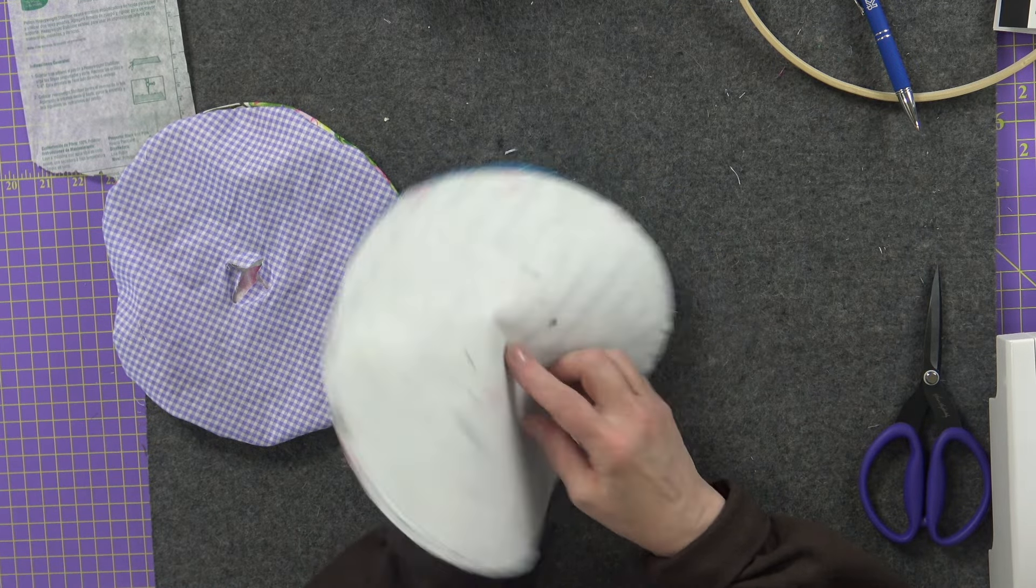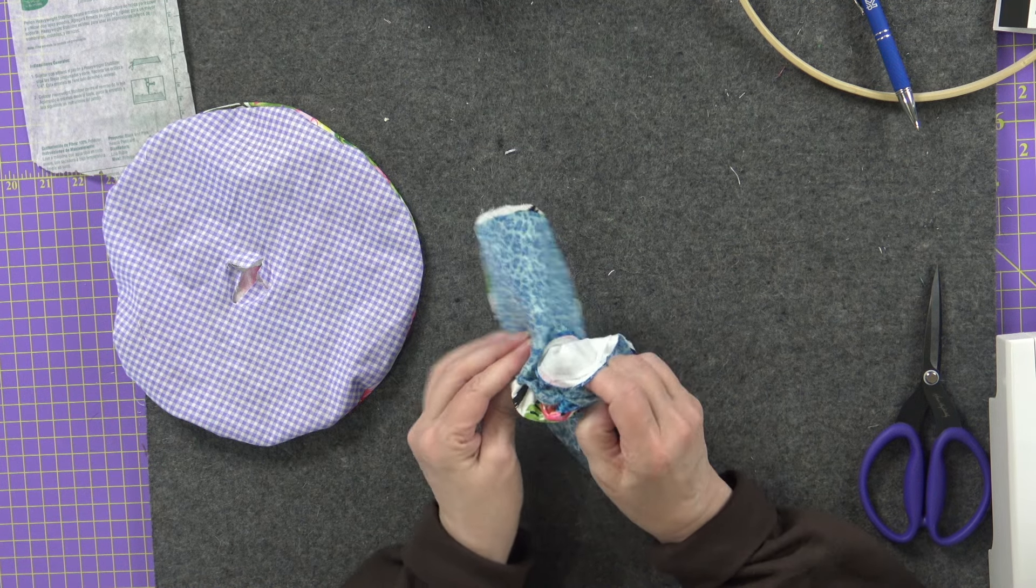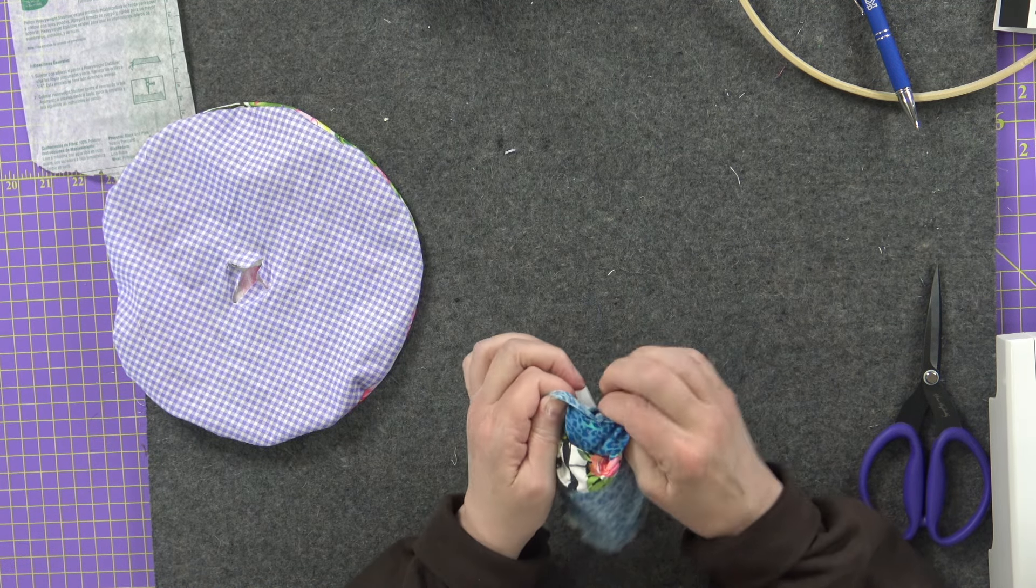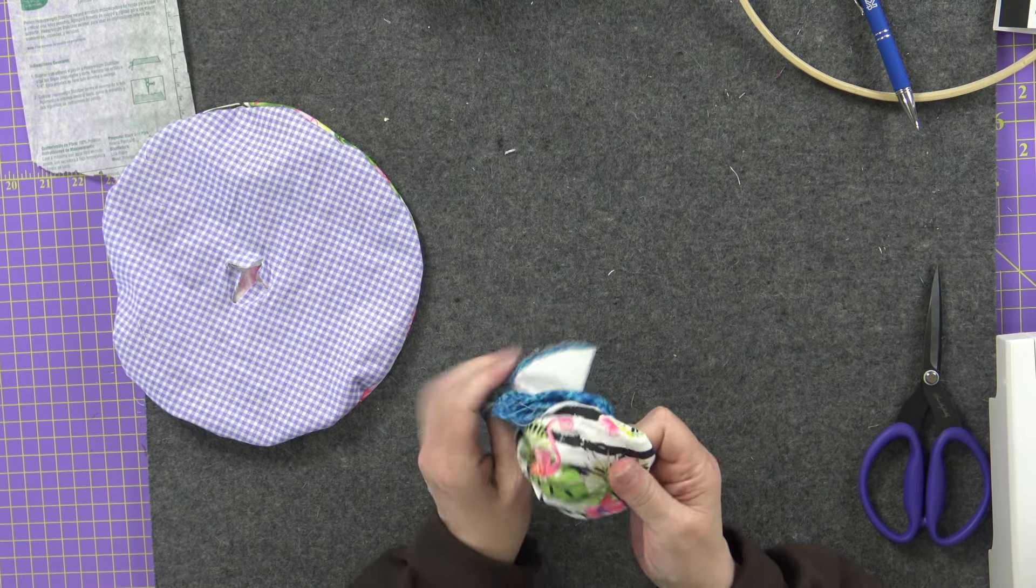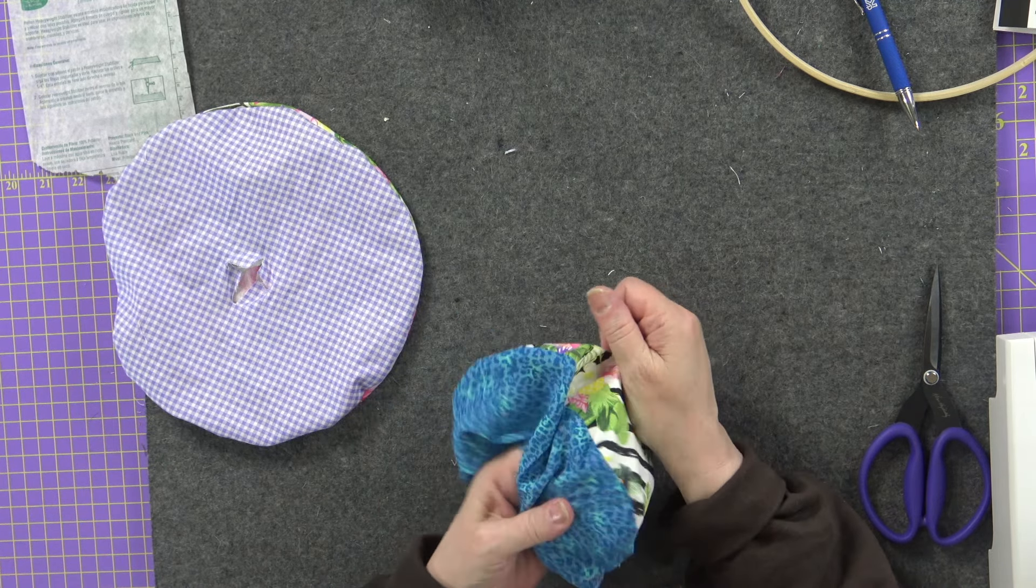This one will be a little bit tougher because it does have the stabilizer on the back part. But the process is still the same. You're going to pop it right side out. Some cute bright fabric there.